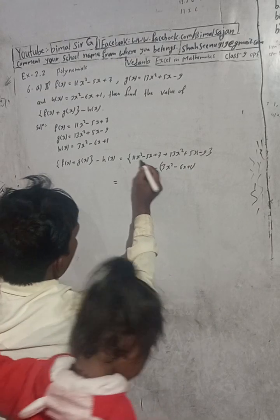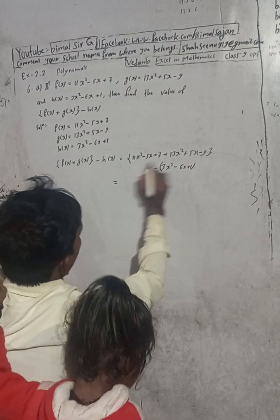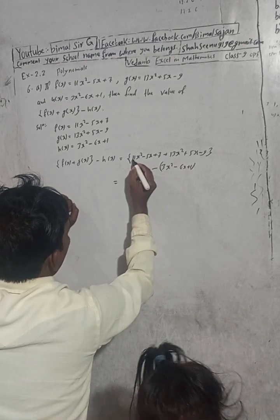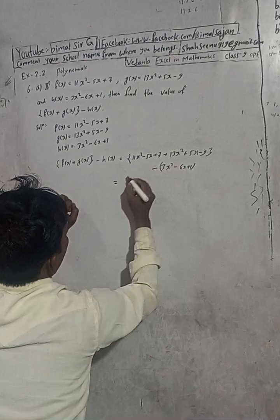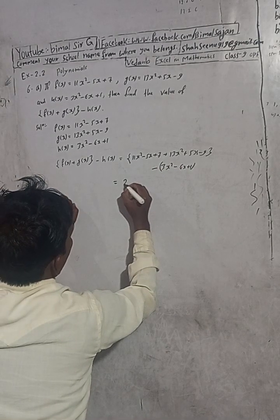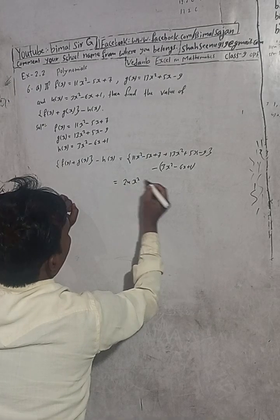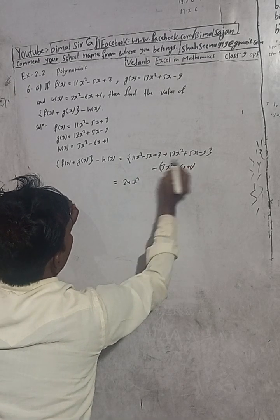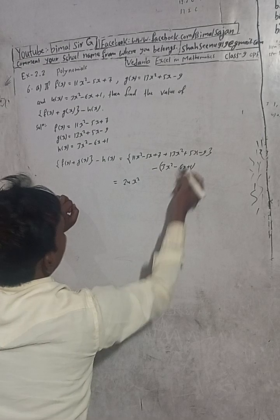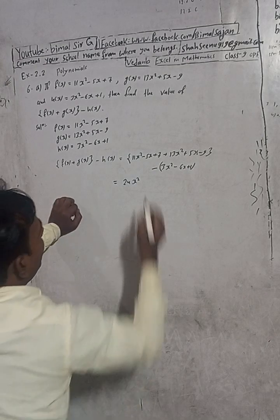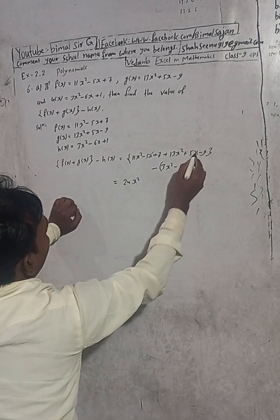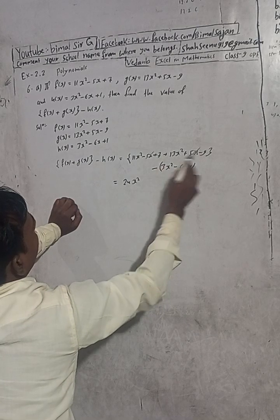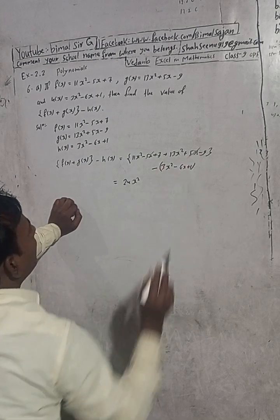11x² and 13x² are both positive, so we add them: 11 plus 13 equals 24, giving us 24x². Then minus 5x and plus 5x cancel each other out. And for the constants, plus 7 and minus 9 have different signs.